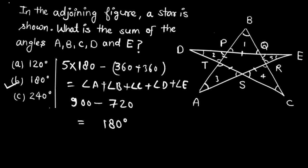So that is the answer to our question. The sum of the angles formed at the corners of any star is 180 degrees. I hope you understand the concept. That's all for today. Thank you for watching, bye bye and take care.